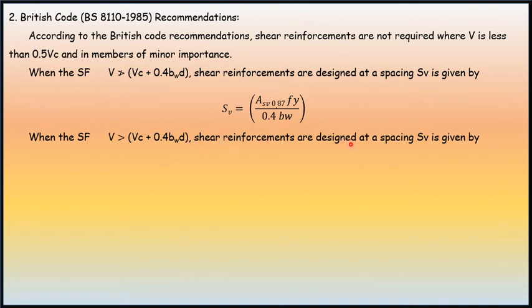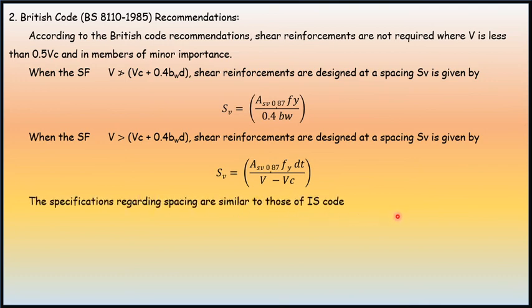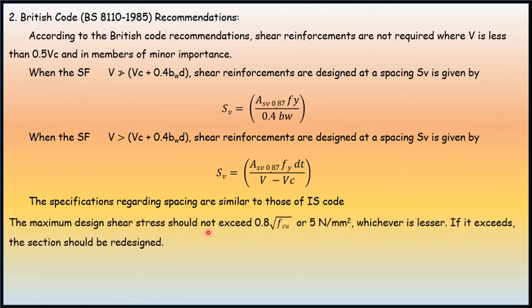When shear force V is greater than Vc + 0.4 × bw × d, shear reinforcements are designed at spacing Sv = Asv × 0.87 × fy × dt / (V - Vc). The specifications regarding spacing are similar to those of IS code. The maximum design shear stress should not exceed 0.8 times square root of fcu or 5 N/mm², whichever is lesser. If it exceeds, the section should be redesigned. American code ACI 318-1989 is not discussed in this video lecture.